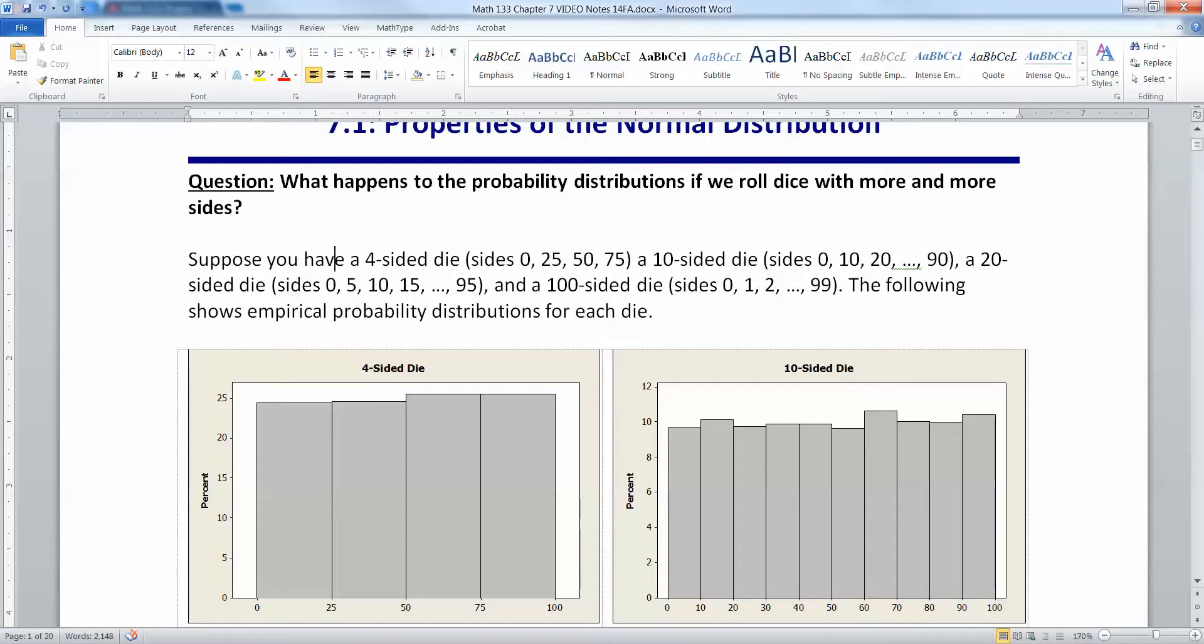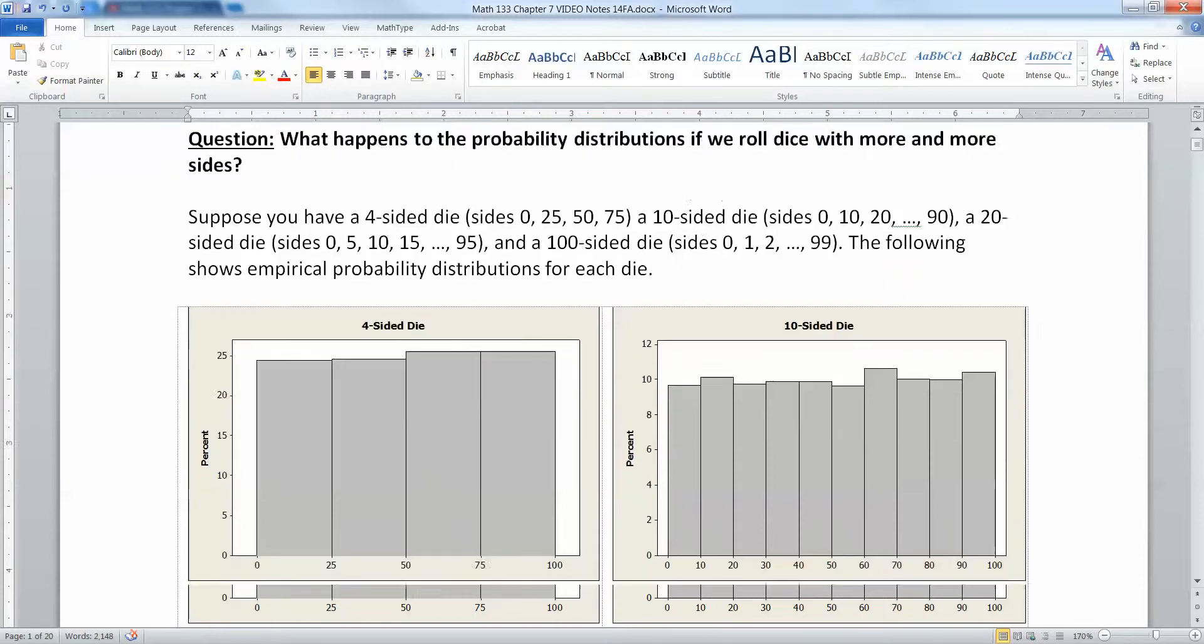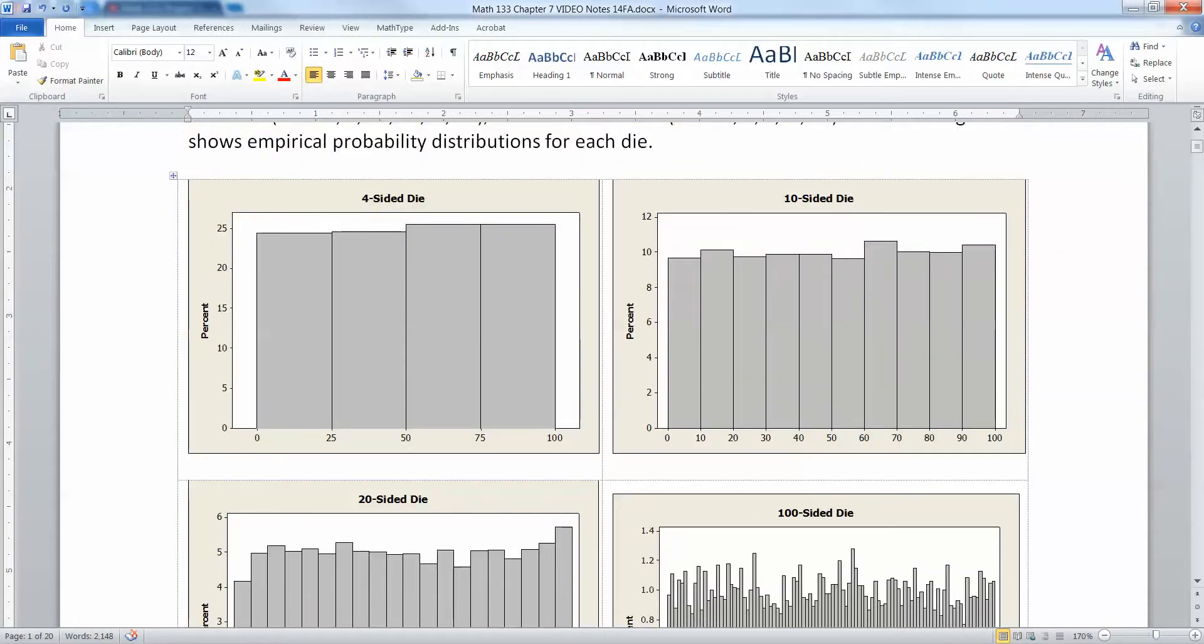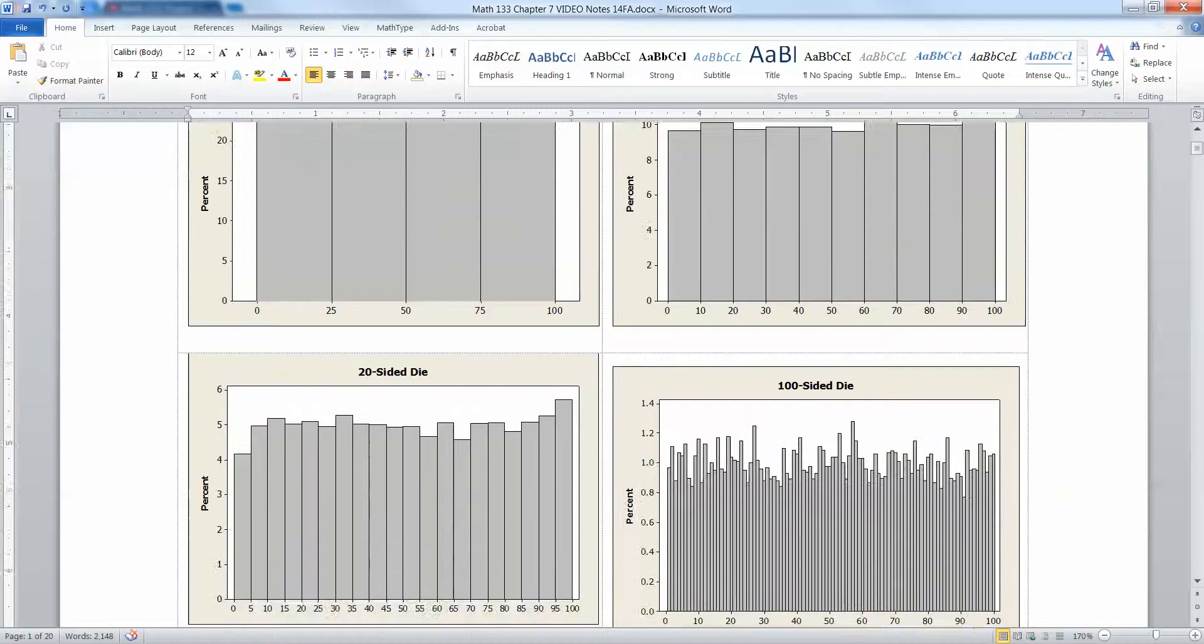The following shows the empirical probability distributions for each die. You can see I ran a simulation here. You have four bars for your four-sided die, ten bars for your 10-sided die, and so on.